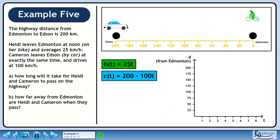We can graph each of these equations using distance on the y-axis and time on the x-axis. Each graph corresponds perfectly to the animation of Heidi and Cameron. The intersection point of the two lines represents where they pass on the highway.